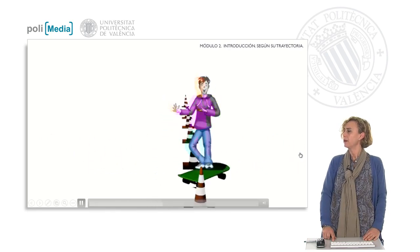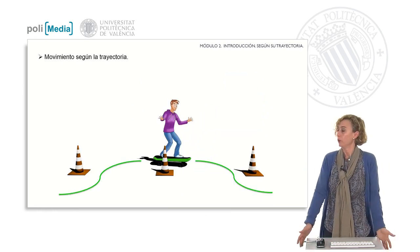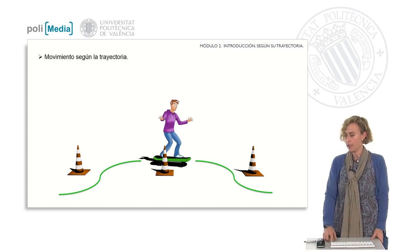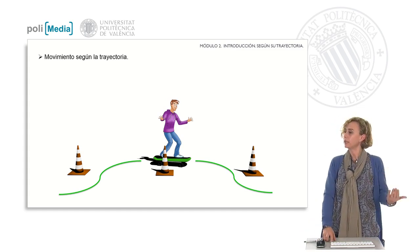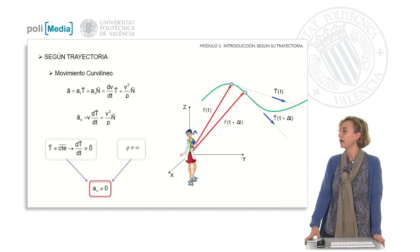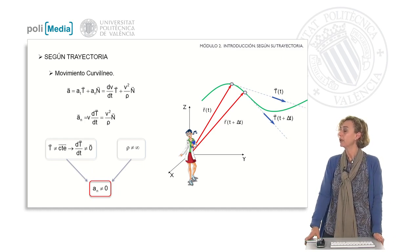We notice that he moves differently and we will analyze the existing differences. Jay hasn't moved in a straight line but has instead followed a curvilinear trajectory. What differences exist with the previous trajectory? In the drawing we see that the tangent vector no longer has a constant direction and therefore its derivative with respect to time is different from zero. It is also observed that in curvilinear motion the radius of curvature takes a finite value. Therefore, the normal acceleration is different from zero.